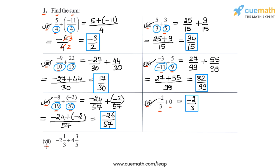Now we come to part 7, in which we have to calculate -2⅓ + 4⅗. These two rational numbers are written in mixed form, so let's first write them in normal form. -2⅓ can be written as: 3 × 2 = 6, 6 + 1 = 7, so the first number is -7/3. The second number 4⅗: 5 × 4 = 20, 20 + 3 = 23, so the second number is 23/5.